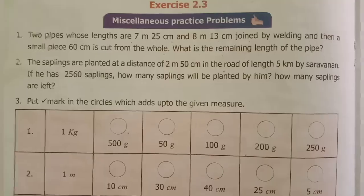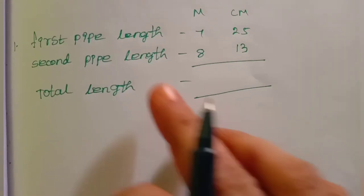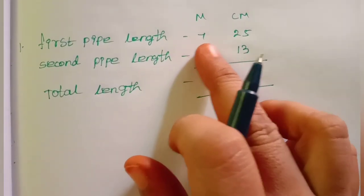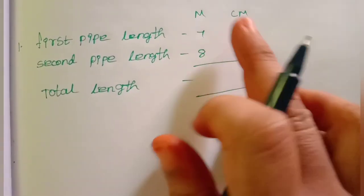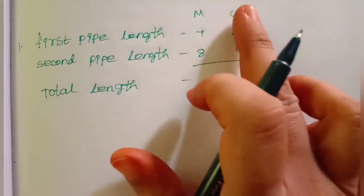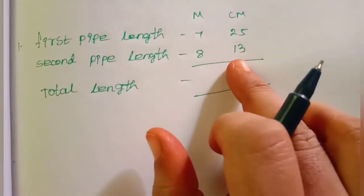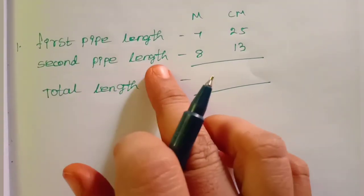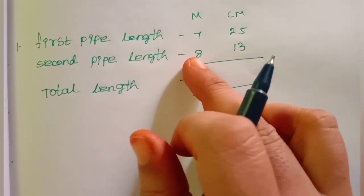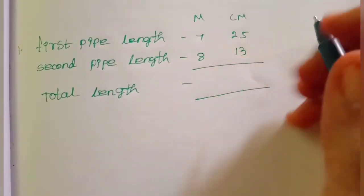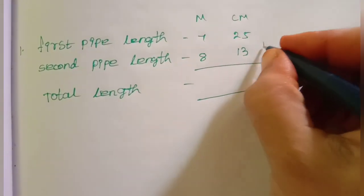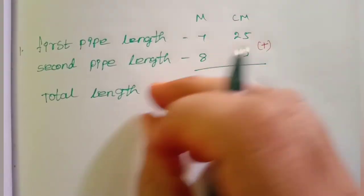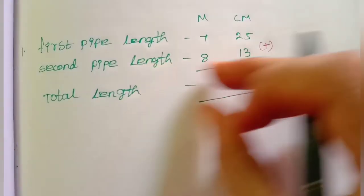The length of the first pipe is 7 meter 25 cm. The length of the second pipe is 8 meter 13 cm. Now, add the length of the two pipes.